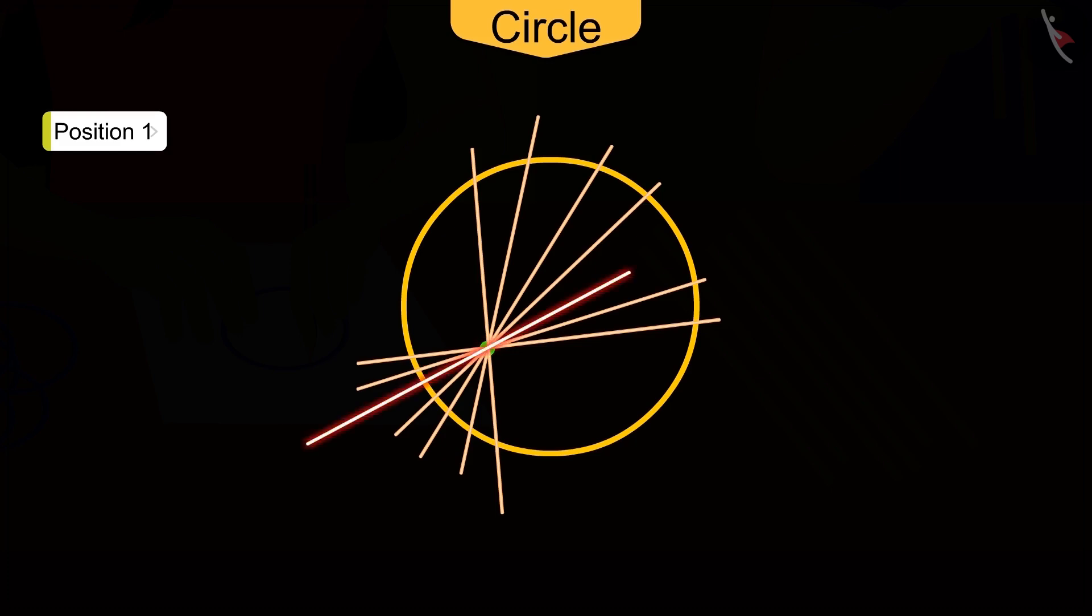But this stick intersects the circle at just one point. So, is this also a tangent? No, this is not a tangent.